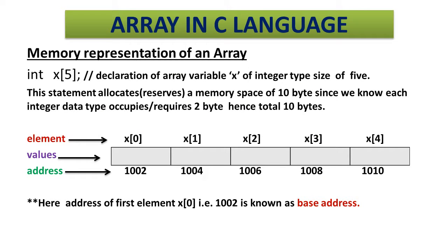Now let's see how we can visualize the memory representation. We declare: int x[5] semicolon. The array variable x is of integer type and size 5. This statement allocates 10 bytes of memory. Why 10 bytes? Because we know that one integer variable requires 2 bytes of memory space. Therefore, total 10 bytes are required for storing 5 values.